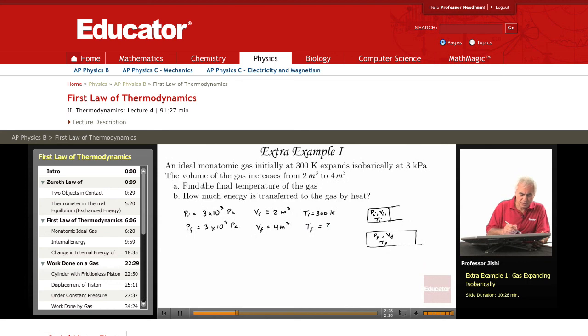We have PV equals nRT, so PI VI equals nR TI and PF VF equals nR TF. If I divide, I get PF VF over PI VI equals TF over TI.